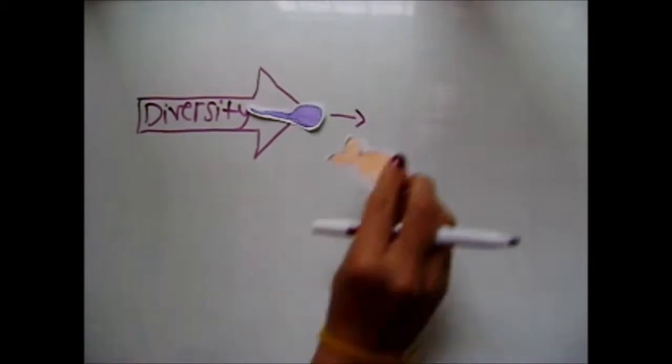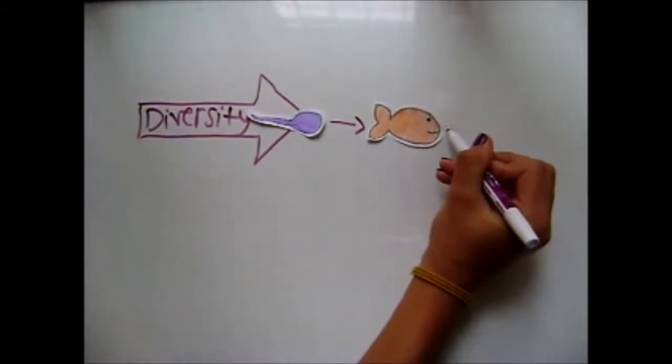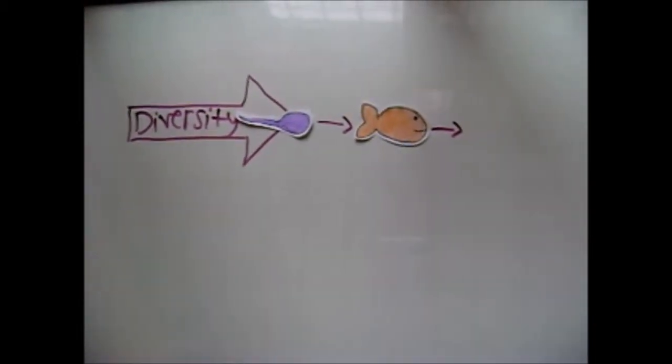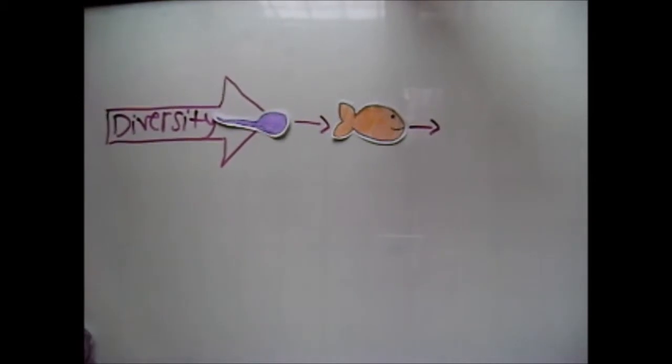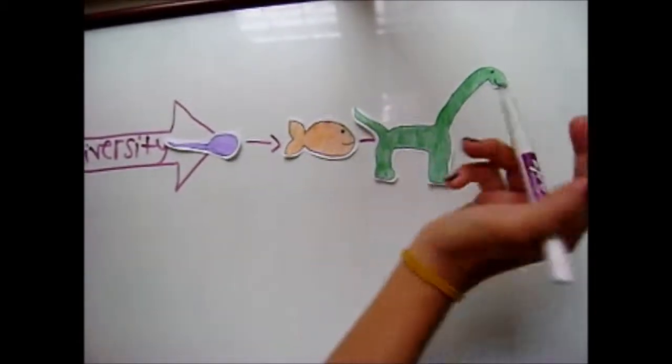One is called speciation, which is the formation of new species. New species that make all diversity true.